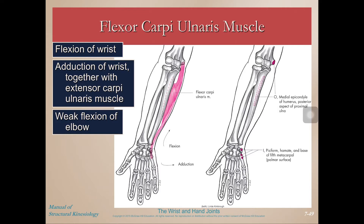Flexor carpi ulnaris is going to flex the wrist on the ulnar side, inserting down there on the ulnar side. So it will also do adduction of the wrist or ulnar deviation, and again we have weak flexion of the elbow.